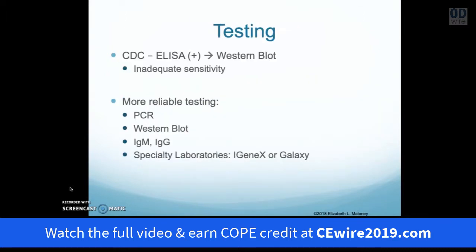According to the CDC, initial testing is done with ELISA testing, and if ELISA comes back positive, they proceed to the western blot. However, tick-borne diseases have a tendency to test insensitive, and most patients can come out negative on common testing. More reliable forms include a combination of PCR, western blot, IgM, and IgG. In the US we have access to specialty labs like Igenex or Galaxy, which are more thorough forms of testing for Lyme.